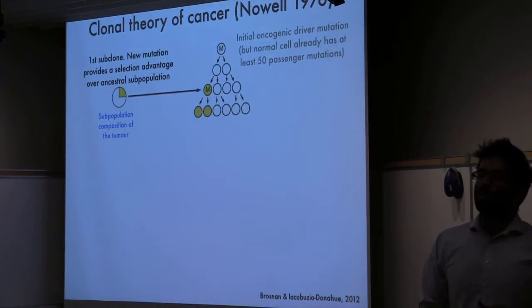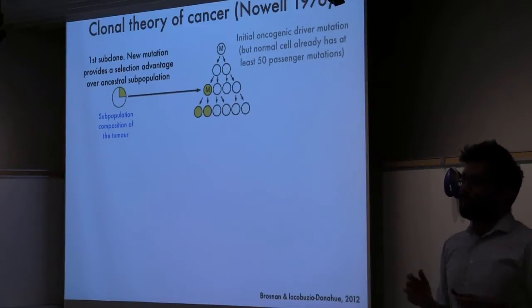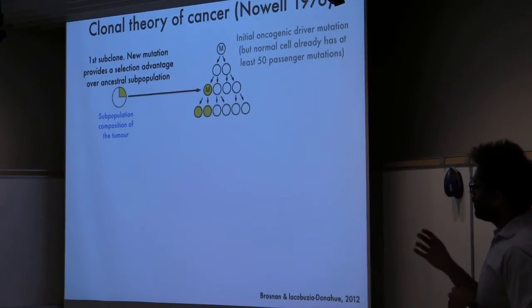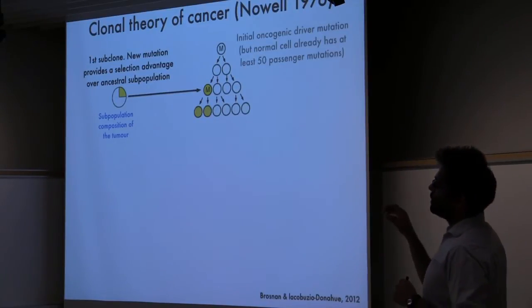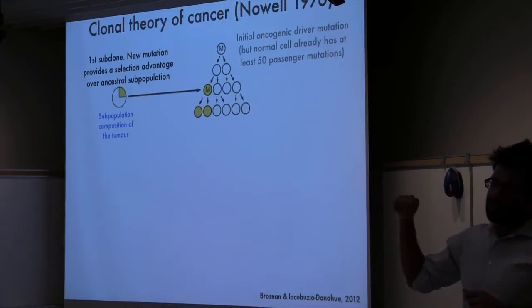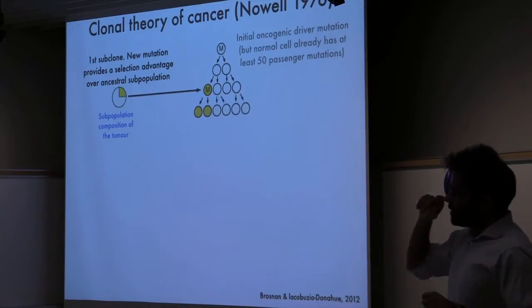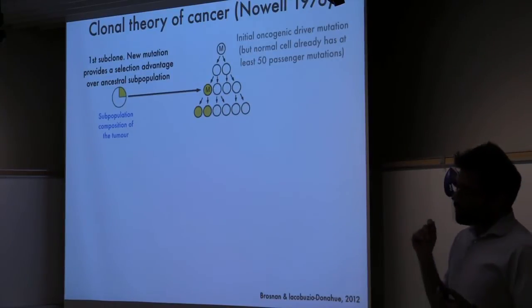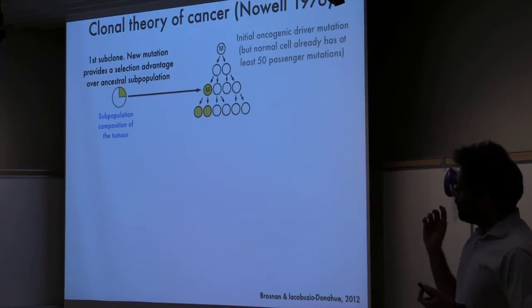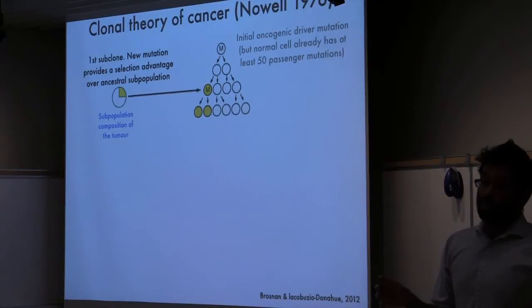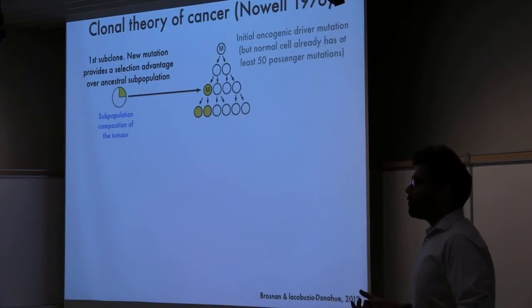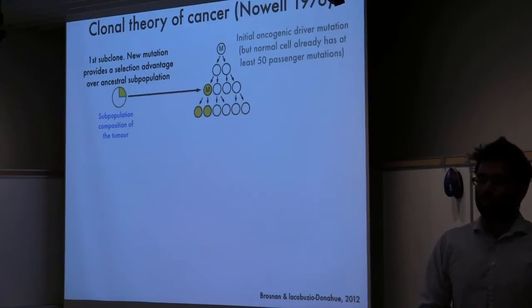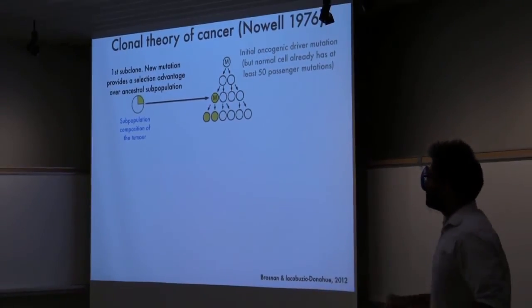Now you have two subpopulations in the same tumor. I want to pause for a second to talk specifically about what mutations are present in those yellow cells at the bottom row. They contain not only the driver and passenger mutations of the founding yellow cell, but also the driver and passenger mutations of the founding white cell up at the top. That will be sort of important later.